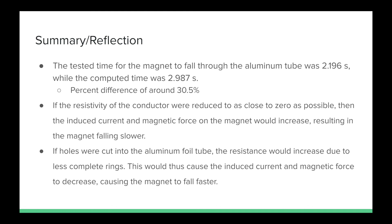To conclude, the tested time for the magnet to fall through the aluminum tube was 2.196 seconds, while the computed time was 2.987 seconds, which is a difference of around 30.5%.